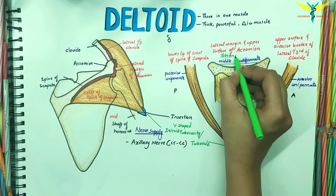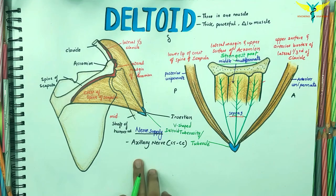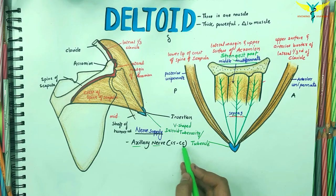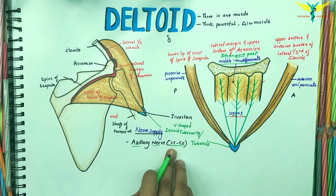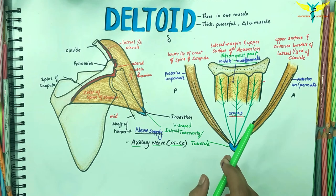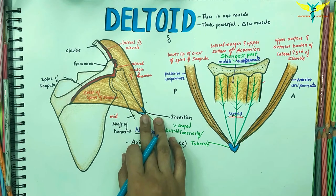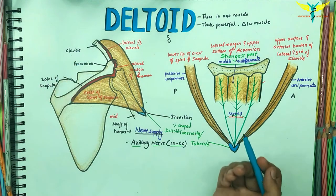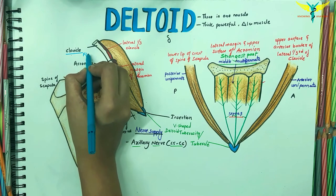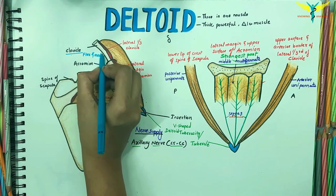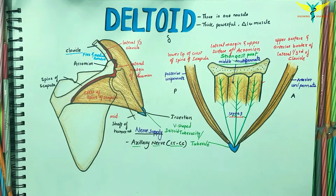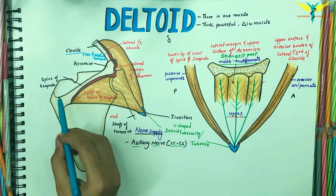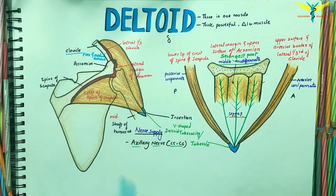Coming to the nerve supply, the deltoid is supplied by the axillary nerve that arises from C5 and C6. Coming to the actions, the anterior clavicular fibers are the flexors and medial rotators, and the posterior or spinous fibers are the extensors and lateral rotators of the arm.